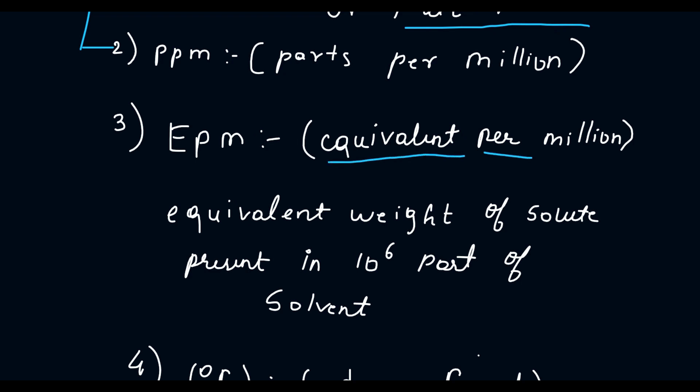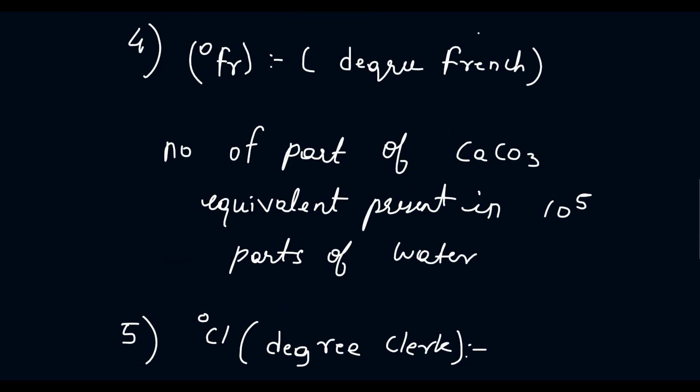Next is EPM — equivalent per million. EPM is the equivalent weight of the solute present in 10 raised to 6 parts of solvent. This is called EPM, that is equivalent per million.